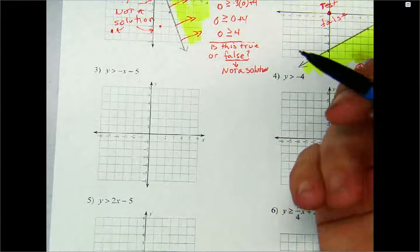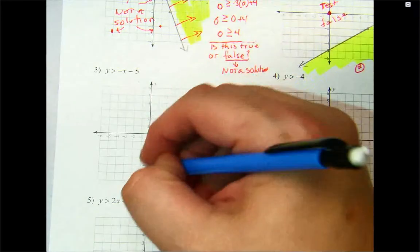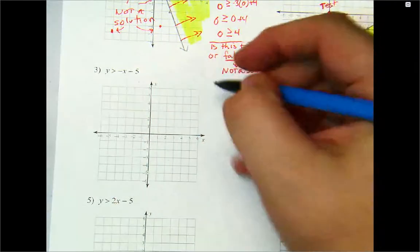All right, for number three, what's the first point that we're going to use? We go to negative five, and what's the slope?